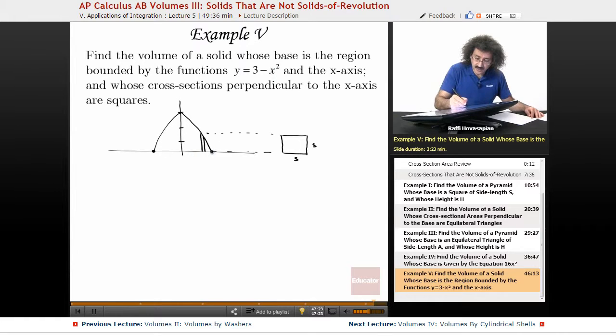These points of intersection, by the way, negative rad 3 and rad 3. And if you're wondering where that came from, well, set this 3 minus x squared to 0. You're going to get x equals plus or minus rad 3. It's going to tell me what the zeros are, what the roots are of this equation.